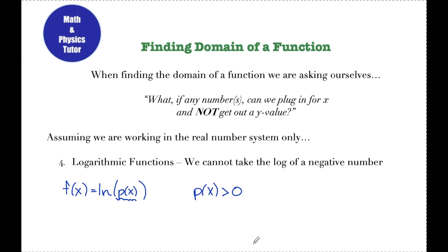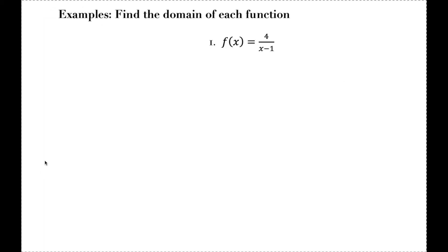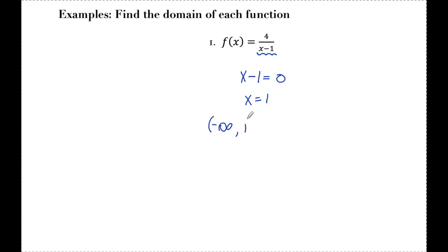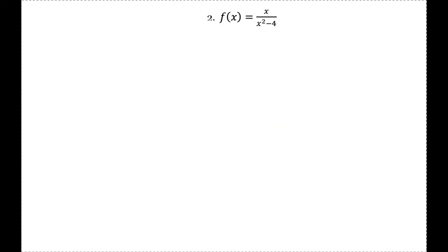Let's take a look at examples of each of the four scenarios. Number one: f of x equals 4 over x minus 1. Since I have a fraction, I have to make sure the denominator is never equal to zero. I set the denominator equal to zero and solve for x: x equals 1. This means I need to exclude 1 from my domain. Written in interval notation, the domain is negative infinity to 1, union 1 to infinity.